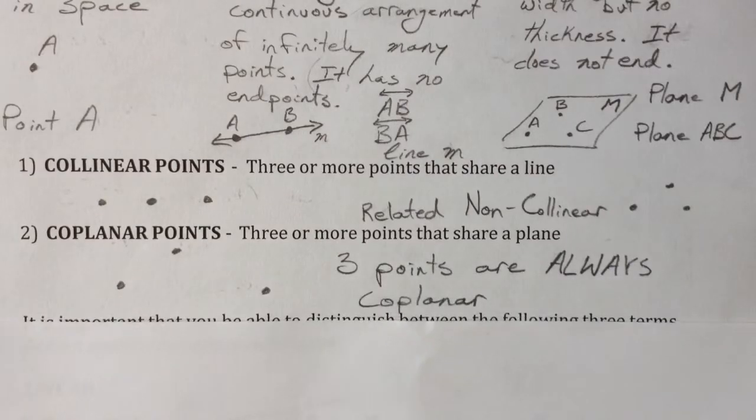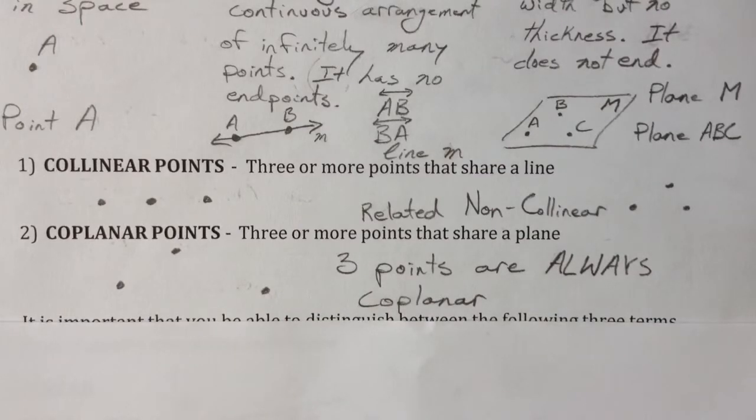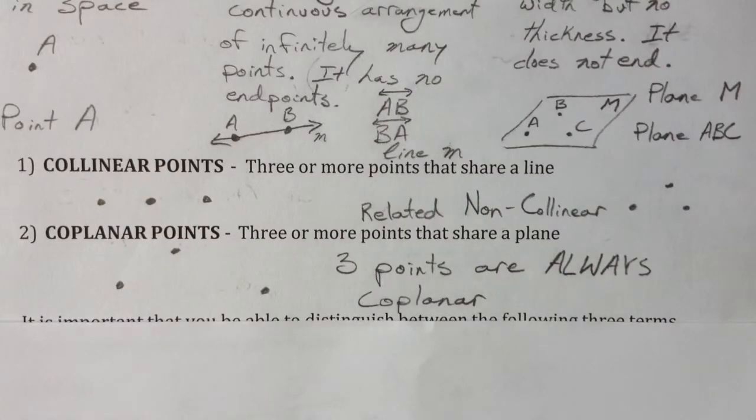But in the same way, you have coplanar points. Any three points or more that share the same plane are called coplanar. Three points by themselves are always coplanar. It's weird because sometimes you think, well, what if one was above? Well, then it'd be on the plane that's sort of cut diagonally. Imagine the triangle that is formed with the three points, and it helps me out imagining what the plane might look like.